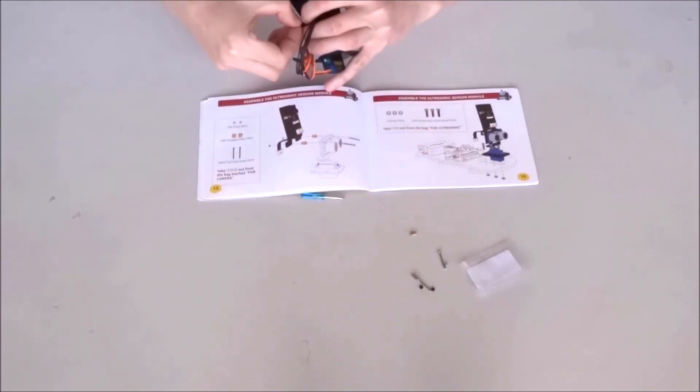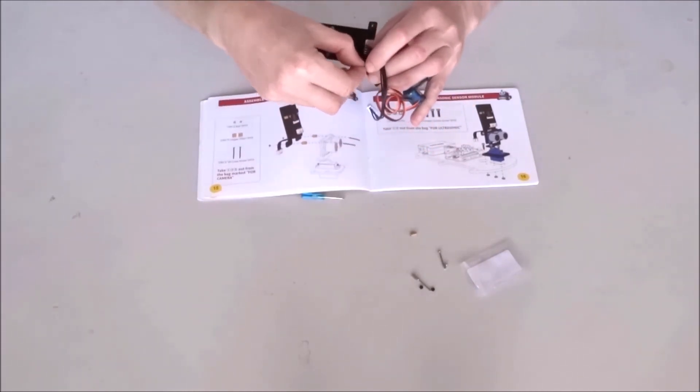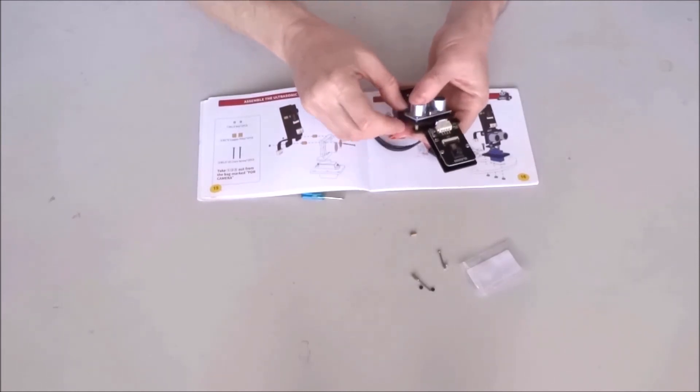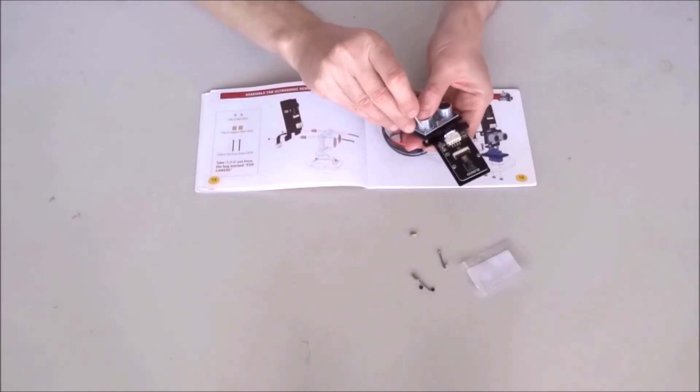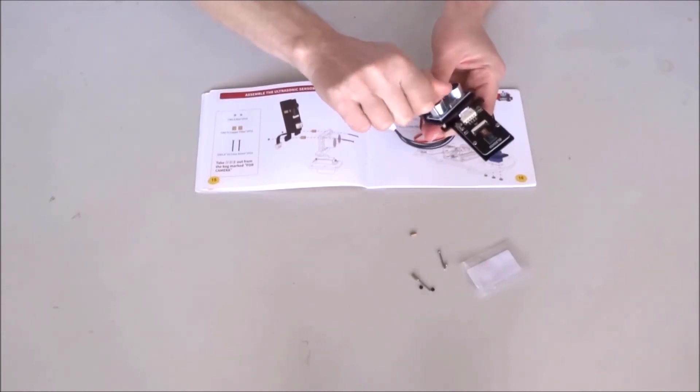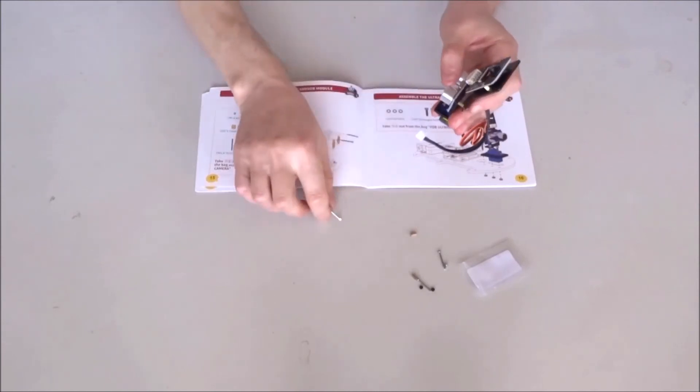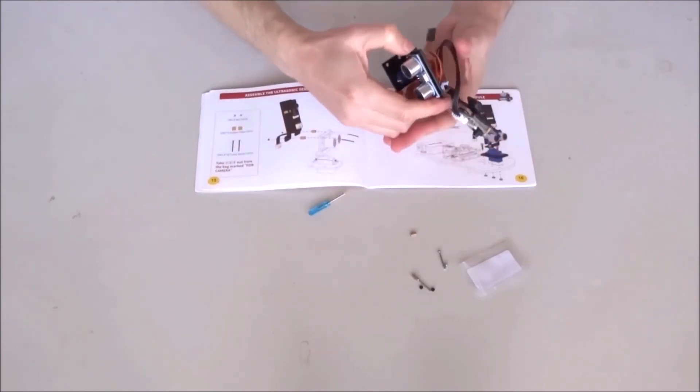Take a small nut, M2x1.6. I have not data to measure, but I'm quite positive this is the M2x1.6 nut. And using the screwdriver, loosely tighten the bolt. Now, we'll repeat the same procedure.